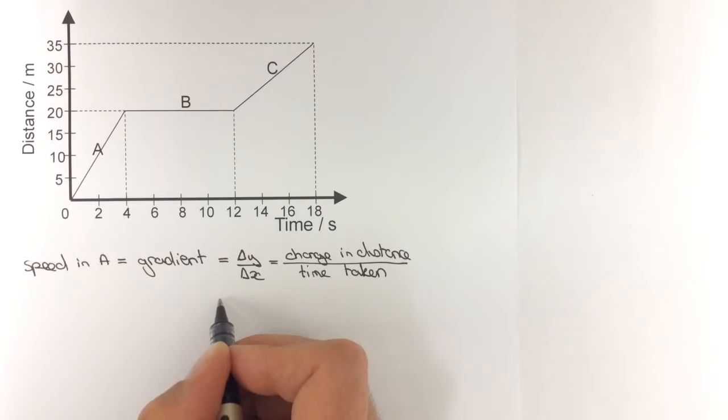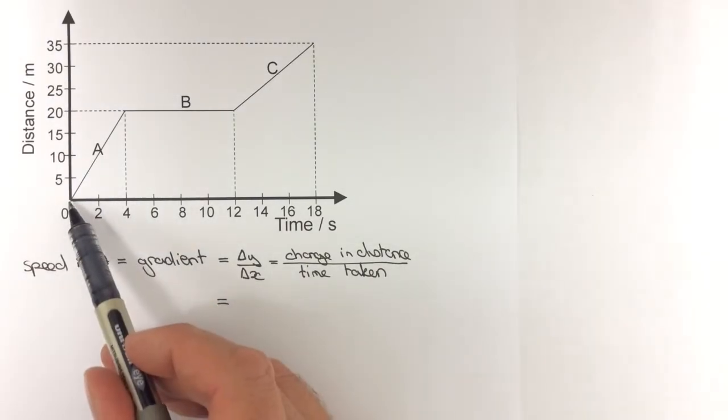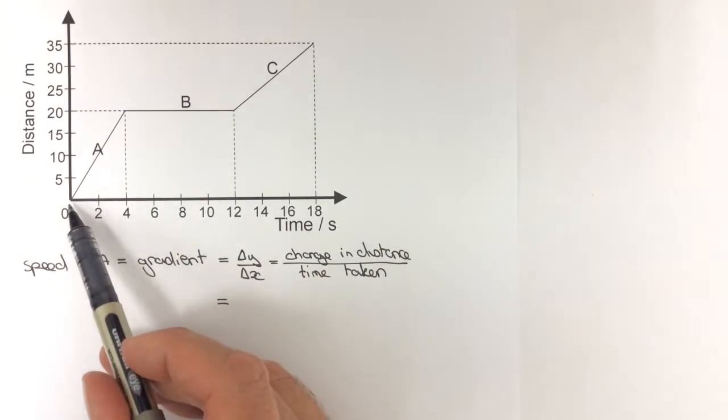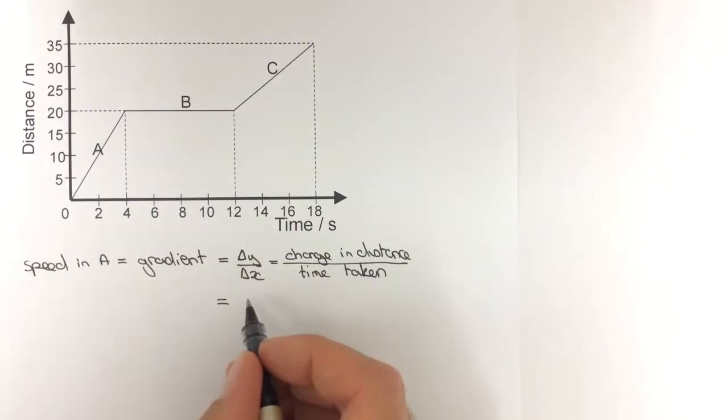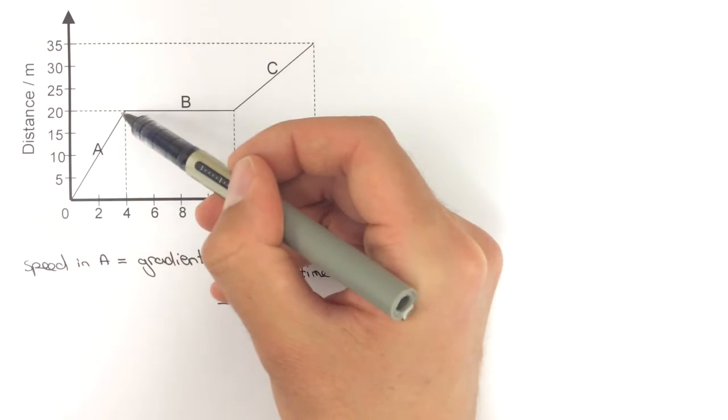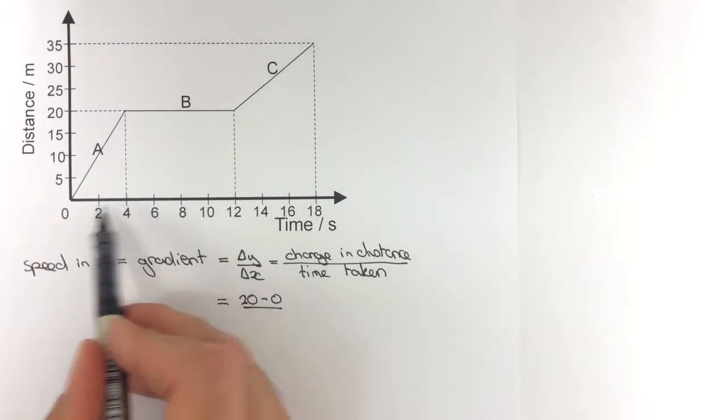Section A is the easiest section because the graph starts at the origin, so the starting value of both time and distance is 0. This makes it relatively easy; I can just look at the end point. The distance is 20 minus 0, and the time is 4 minus 0